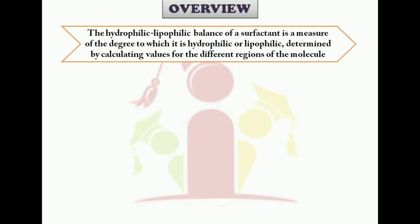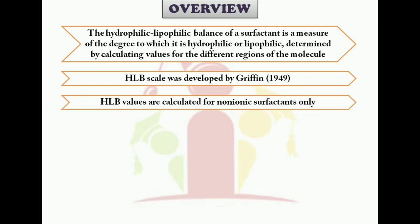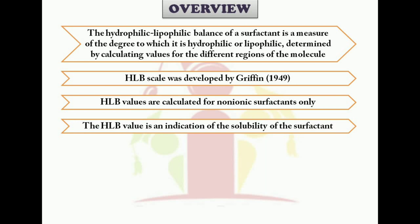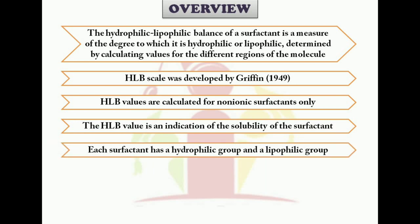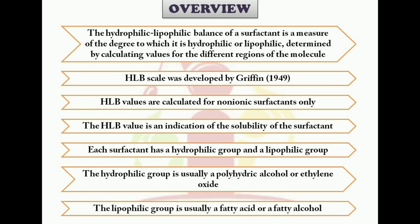With an overview: the hydrophilic-lipophilic balance of a surfactant is a measure of the degree to which it is hydrophilic or lipophilic, determined by calculating values for the different regions of the molecule. The HLB scale was developed by Griffin in the year 1949. HLB values are calculated for non-ionic surfactants only. The HLB value is an indication of the solubility of the surfactant, and each surfactant has a hydrophilic group and a lipophilic group. The range of HLB values lies from 1 to 20.